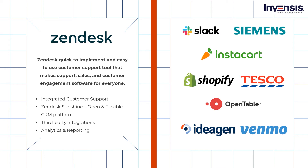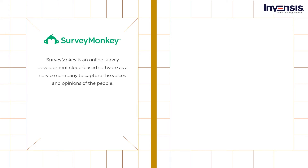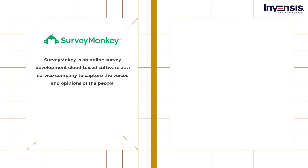Some of Zendesk's trusted customers are Slack, Shopify, OpenTable, Tesco, Uber, Stanley Black and Decker, and others. Next up is SurveyMonkey. Trusted by 98% of the Fortune 500 and used in more than 335,000 organizations worldwide, SurveyMonkey is a global leader in survey software. It is a cloud-based survey tool that helps users create, send, and analyze surveys. Users can email surveys to respondents and post them on their websites and social media profiles to increase the response rate.